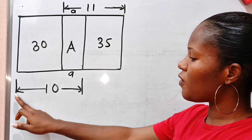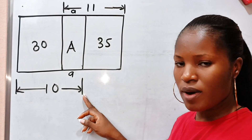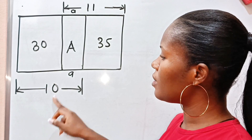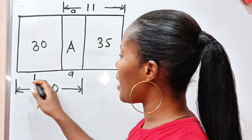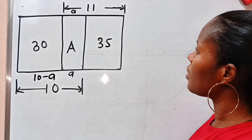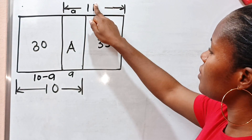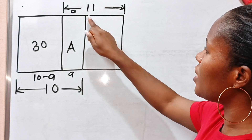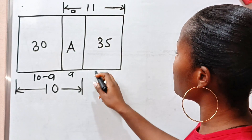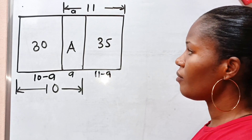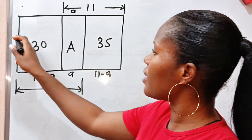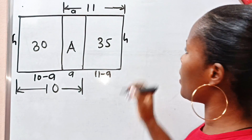Now, that means that from here to here is 10, which means from here to here should be 10 minus a. Similarly, if from here to here is 11 and from here to here is a, it means that from here to here is 11 minus a. The heights are the same — let's call the height h, which is also h here.